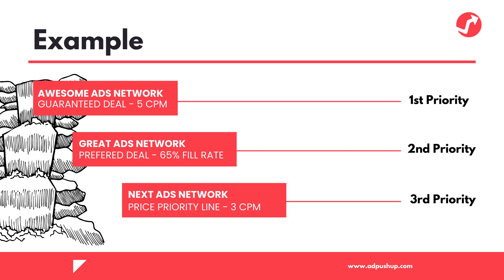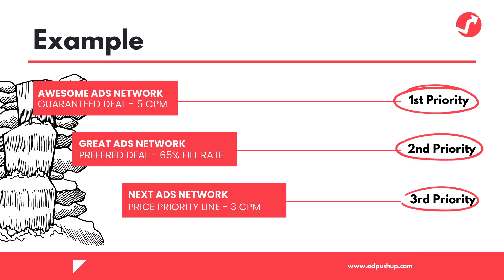In this example, the first ad network has the first priority because you can set it up on the line item. The other ad network has the second priority and the third has the third priority. Therefore, every time the networks are competing for your inventory and it has not been sold through your other demands, they're going to get filled by these line items.